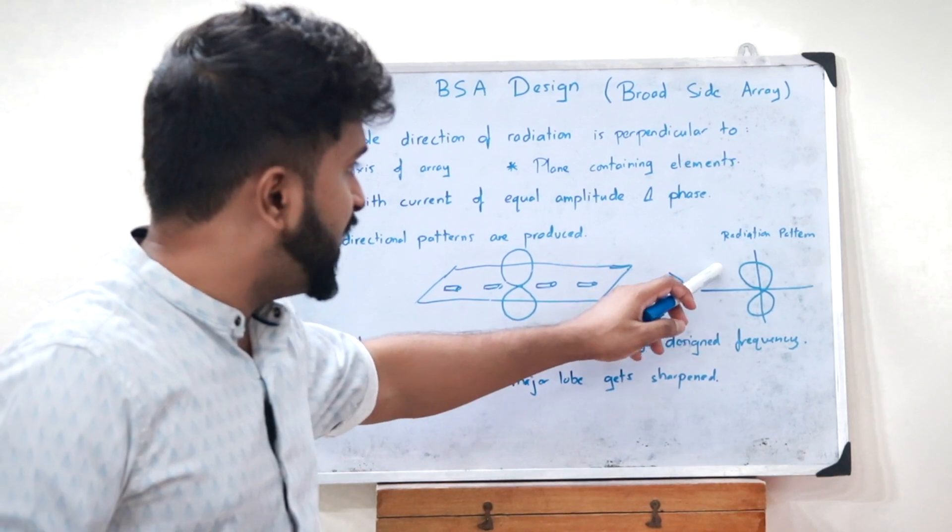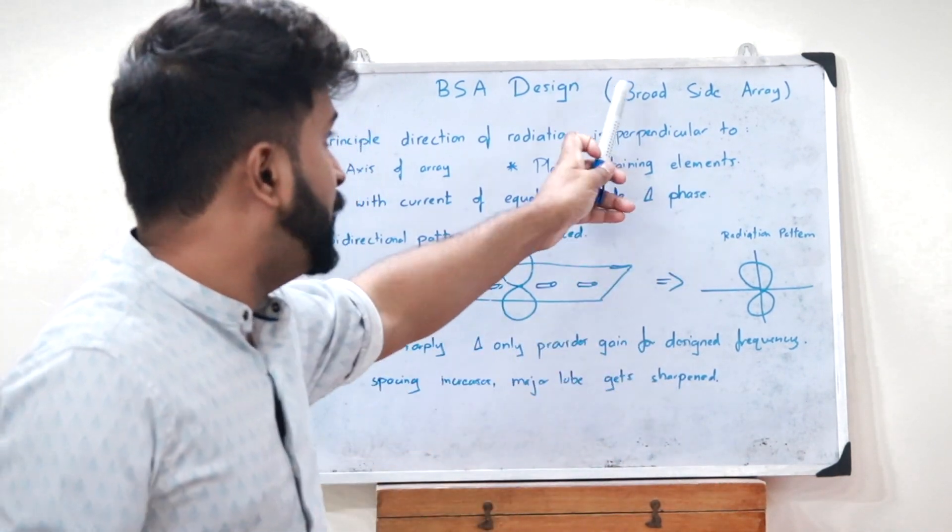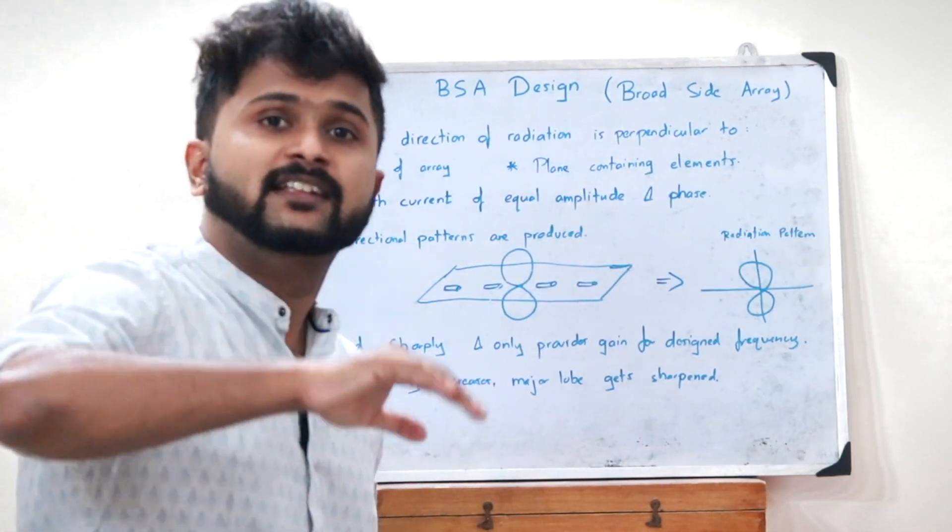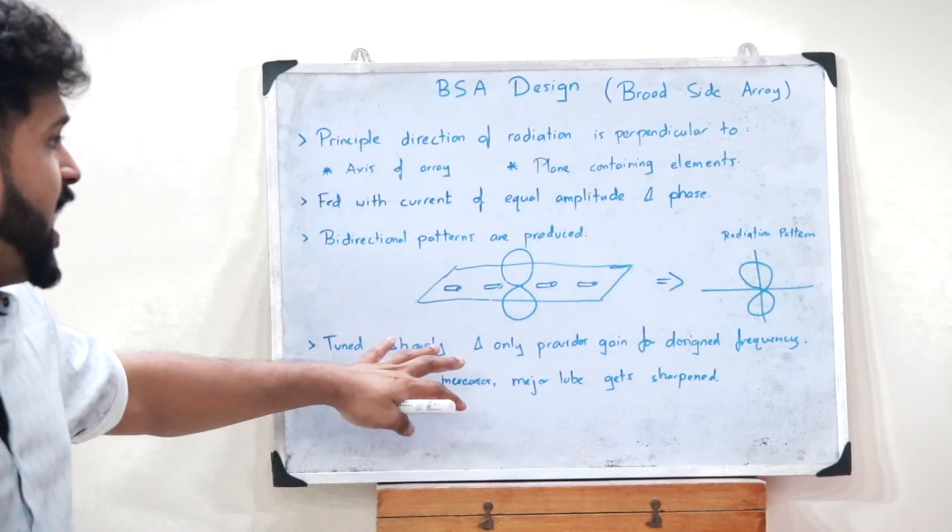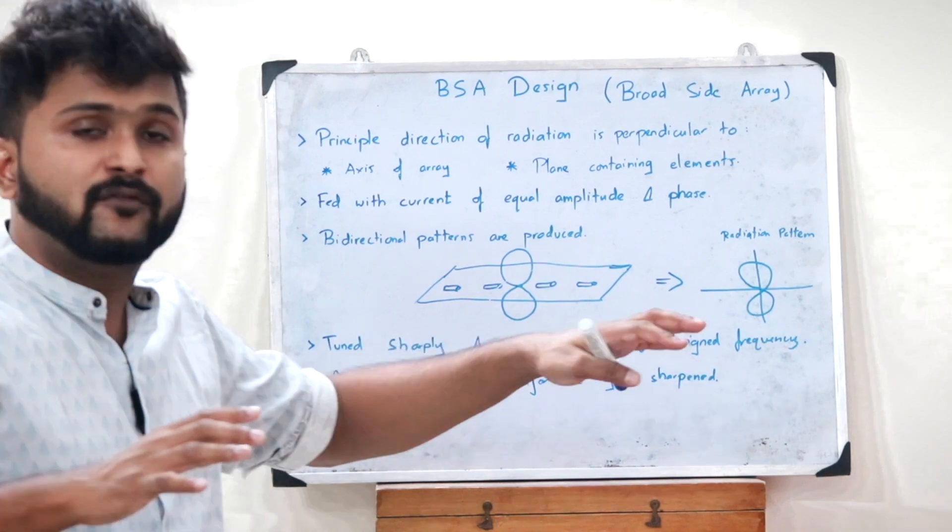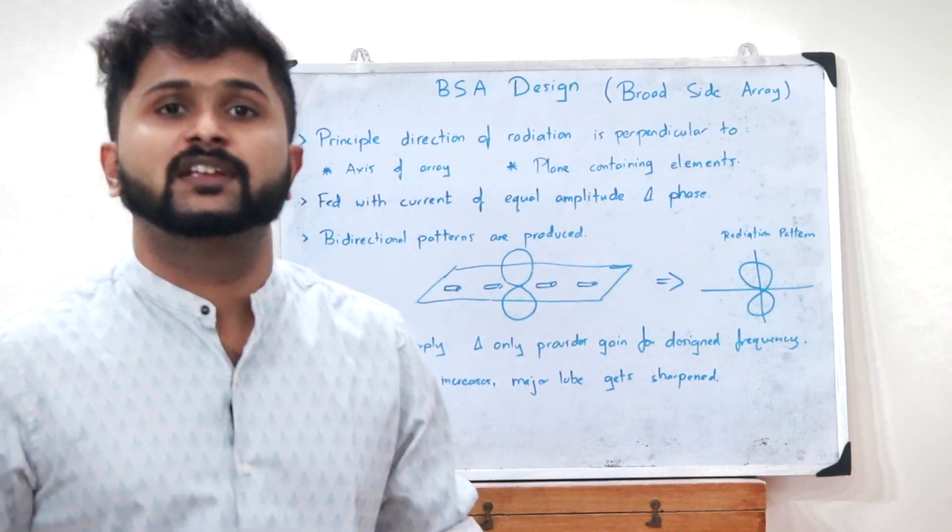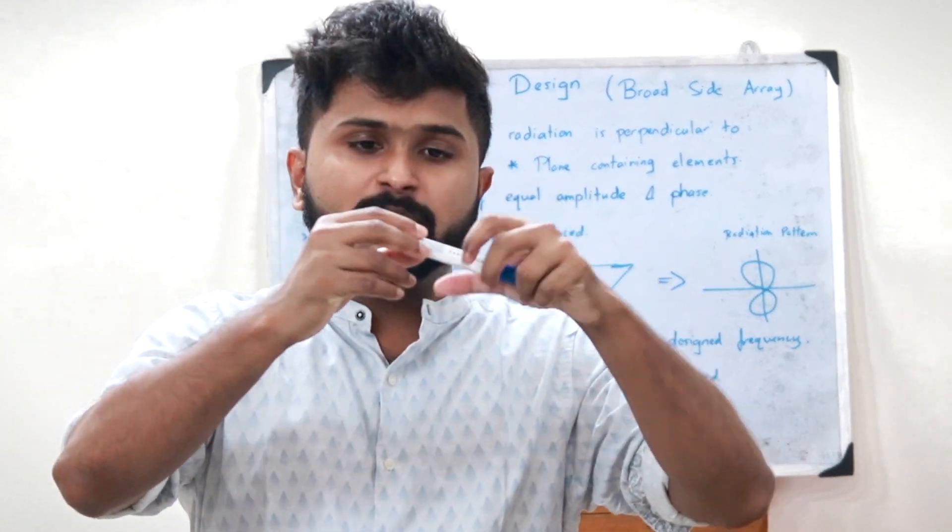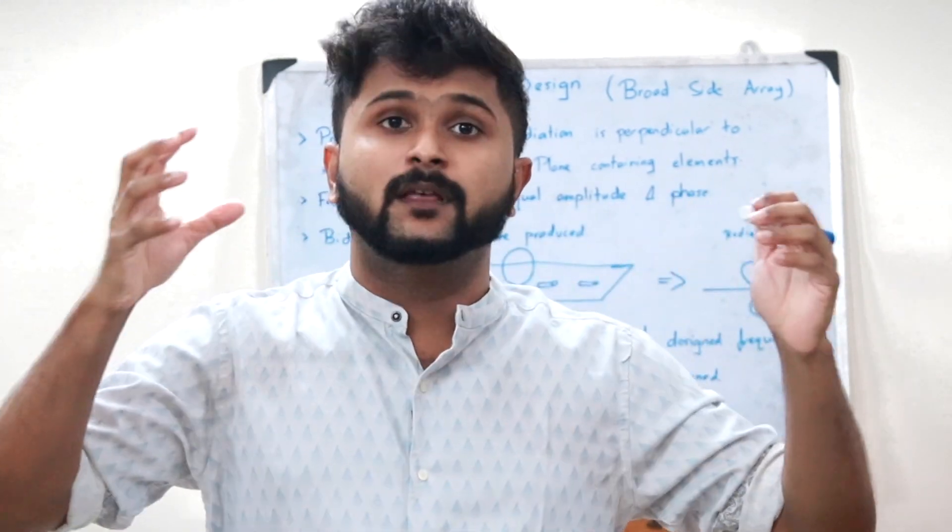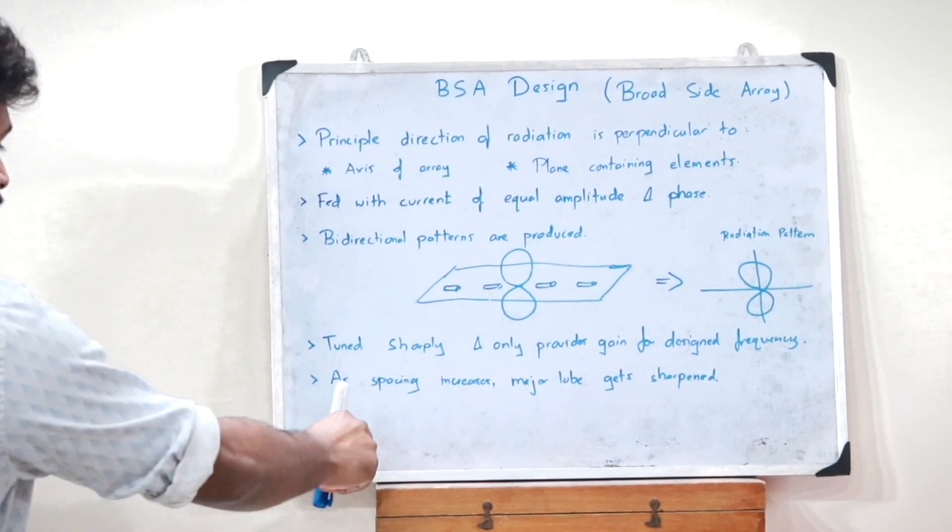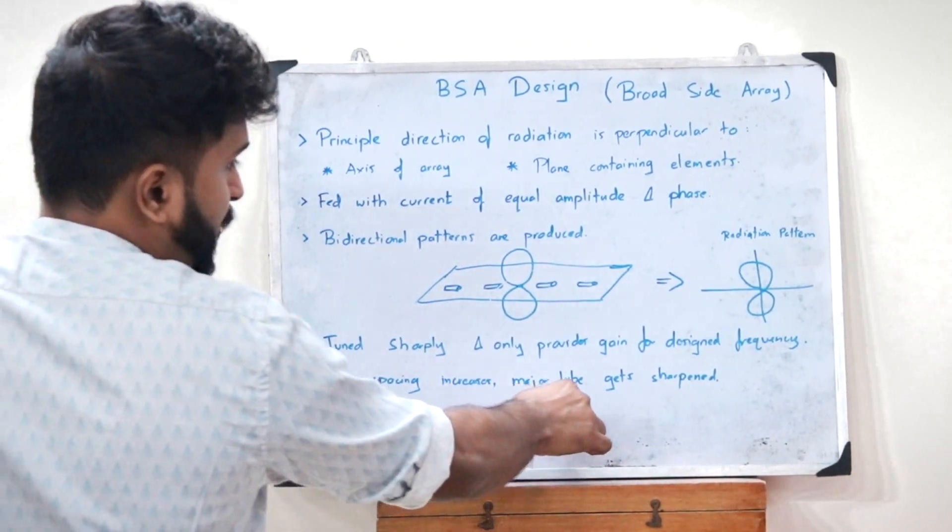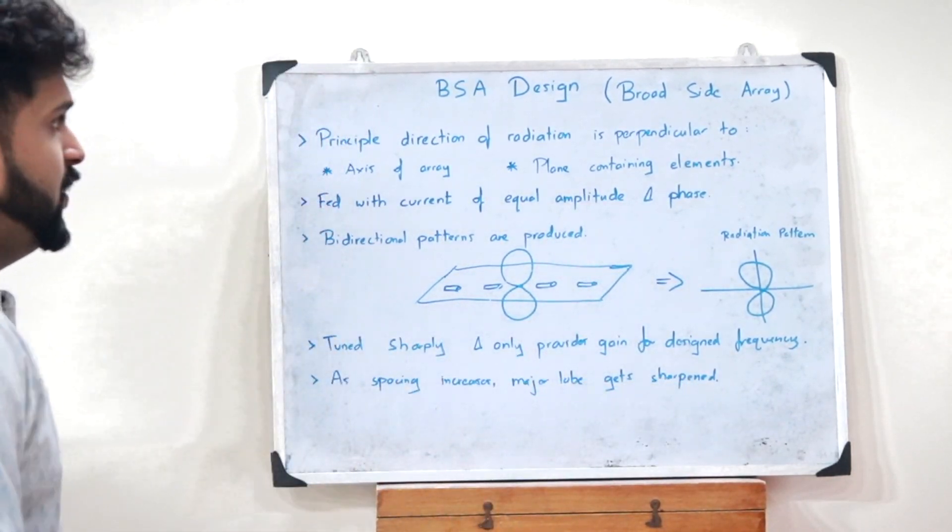So this is the radiation pattern that is obtained for a broadside array of antennas. Here it is tuned very sharply and only provides gain for a designed frequency. And as the spacing between the elements of this array increases, the major lobe gets sharpened.